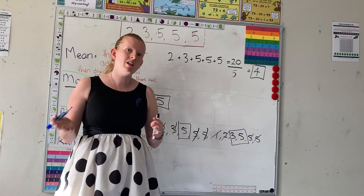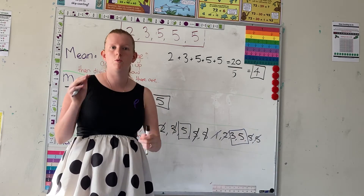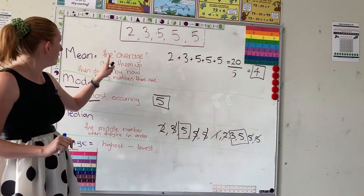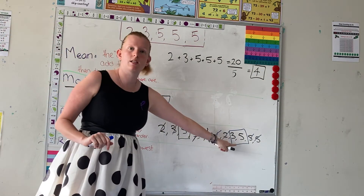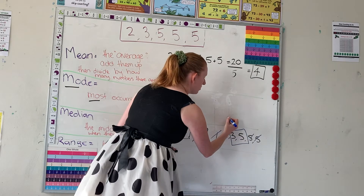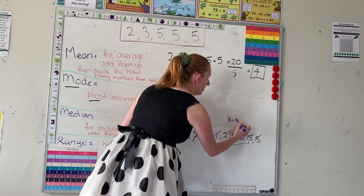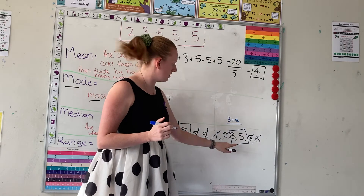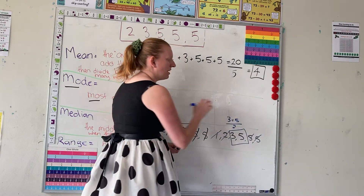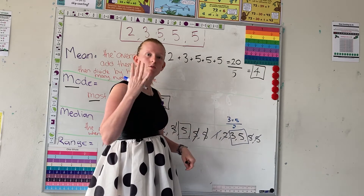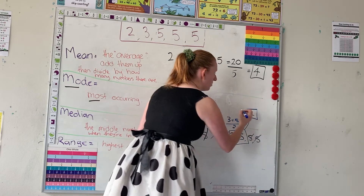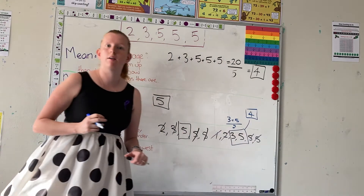But if you've got strange numbers and you didn't know what number was smack bang in the middle, you're going to find the mean of just these two numbers. So you're going to add them together: three plus five, then divide by how many numbers there are — in this case two. Three plus five is eight, eight divided by two is four. So four would be our median number.